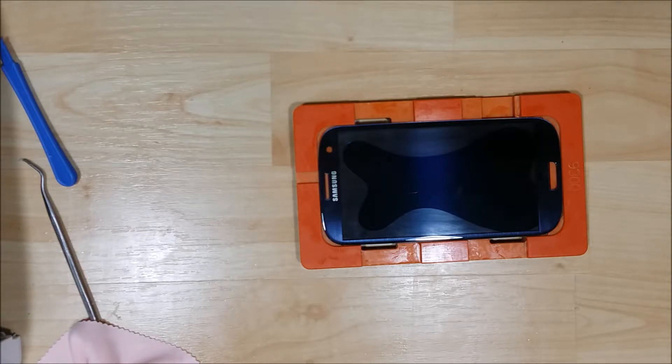Alright, we're going to let it sit for just a few seconds. Let the glue work its way down. The pressure of the glass onto the glue will start to make it seep out into the edges and sides of the phone.